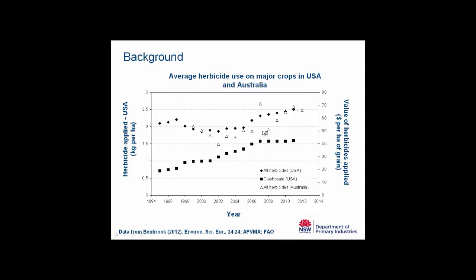A similar trend can be seen in Australia with these white diamonds, however data for the actual herbicide applied to crops is not readily available. Instead we have the value of herbicide applied, scaled per hectare of grain produced each year, showing a similar trend. The authors put the decline in herbicides applied down to the fact that herbicide chemistry is becoming a lot better and more effective at lower concentrations, but the trend is starting to turn upwards again.